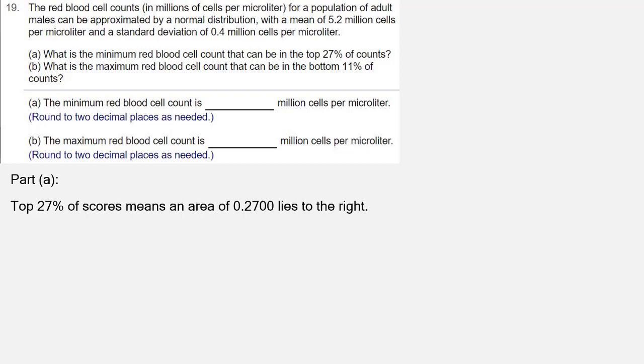The top 27% of scores means an area of 0.2700 lies to the right, but remember that the standard normal distribution table always represents areas to the left. So we have to compute that area to the left by subtracting 0.2700 from 1, which means an area of 0.7300 lies to the left.